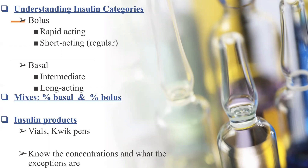First we need to understand the categories of insulin. To stay organized, we have the bolus types of insulins and the basals. Under the bolus types, we have rapid acting and short acting, which is also known as regular. The basals are the long acting and the intermediates. We also have the mixes, which is a percentage basal and percentage bolus given all in one.